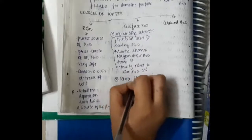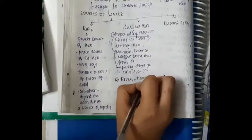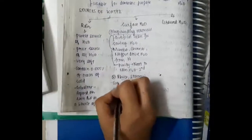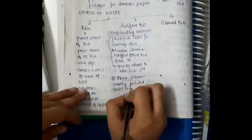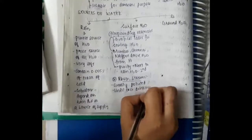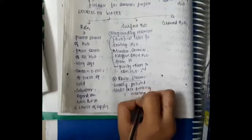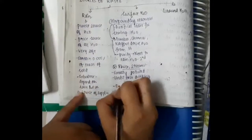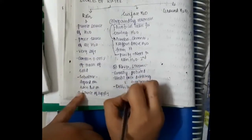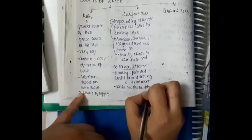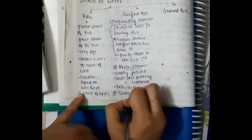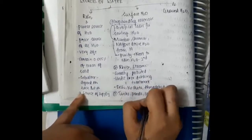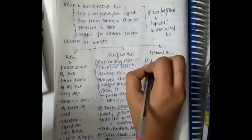The next type of surface waters are rivers and streams. Rivers and streams are grossly polluted water — they are unfit for drinking without treatment. You will have to treat the water, purify it, and then use it for drinking. Cities like Delhi, Kolkata, and Ahmedabad use river and stream waters. The third type of surface water is tanks, ponds, and lakes.